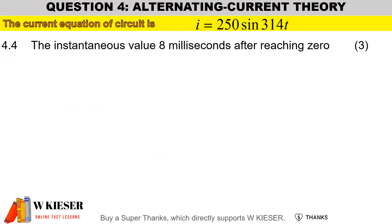In our final question 4.4, calculate the instantaneous value 8 milliseconds after reaching zero. To calculate the instantaneous value it'll be the maximum value of 250 amps multiplied by sine, and then to determine the phase angle it'll be the angular velocity of 314 multiplied by 8 divided by 1000 to convert milliseconds to seconds, and then to convert radians to degrees we multiply by 57.3.